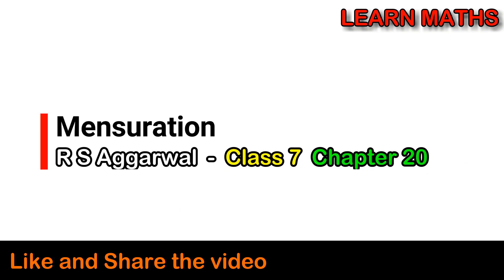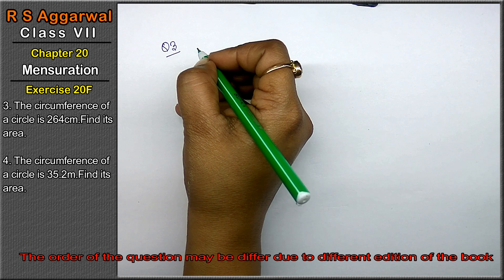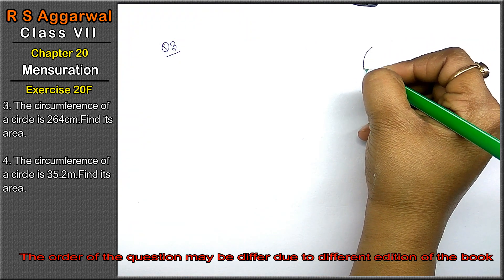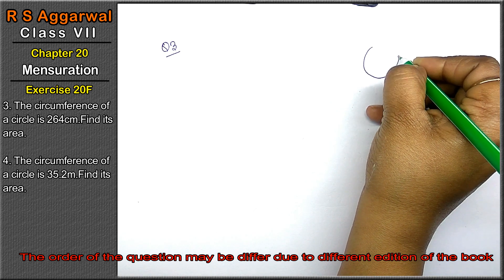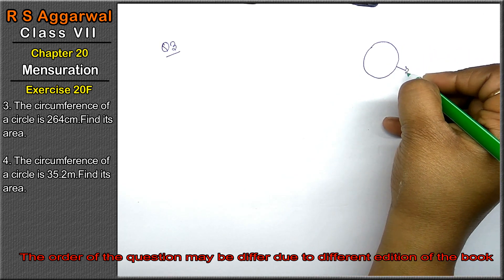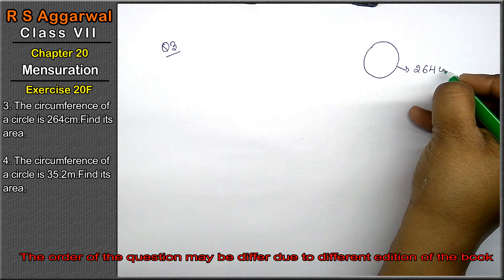Let's do question number 3rd of exercise 20F that is mensuration. The circumference of a circle. Friends, this outer part of the circle is called the circumference. This is given to us 264 and we have to find out the area.